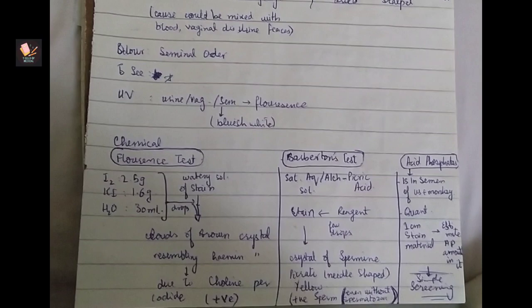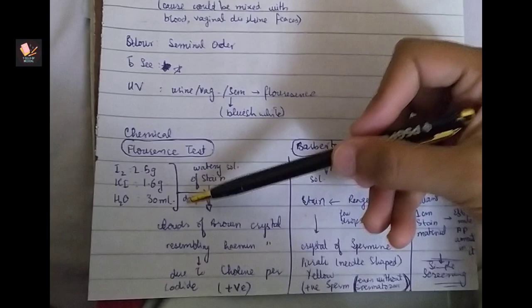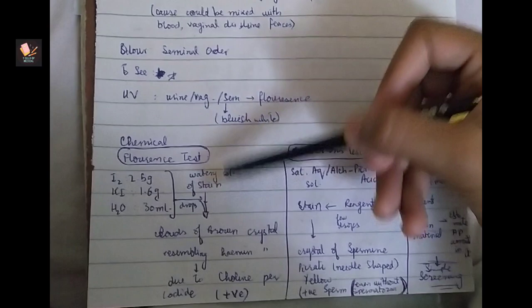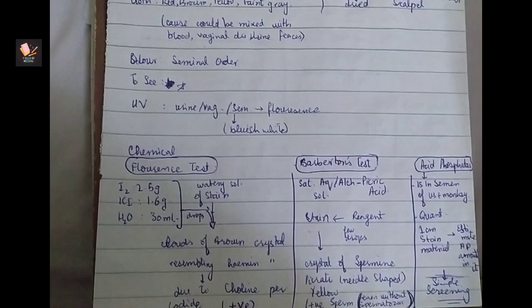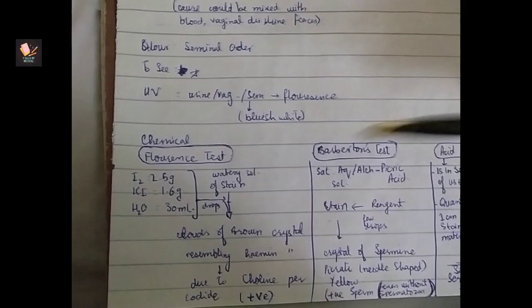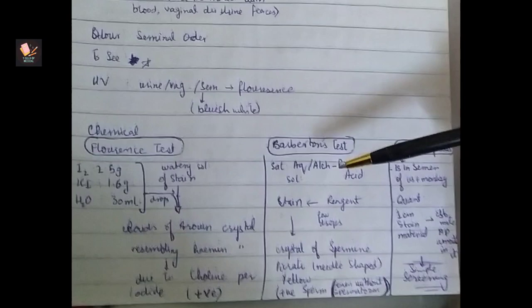We have to use the reagent in these quantities: iodine, potash iodide and water in these quantities. We have to use water solution stain and add some reagent. So if you have semen, then brown crystals cloud appear, which is due to the presence of choline and iodide.